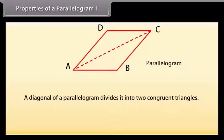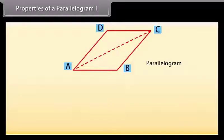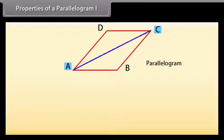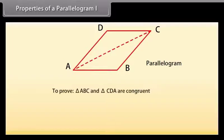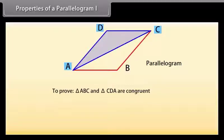Let's prove this theorem. Let ABCD be a parallelogram and AC be a diagonal. We can see that diagonal AC divides parallelogram ABCD into two triangles — triangle ABC and triangle CDA. We need to prove that triangle ABC and triangle CDA are congruent.